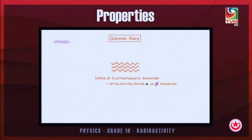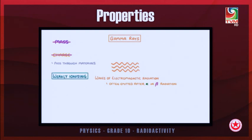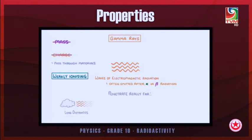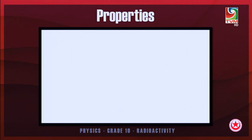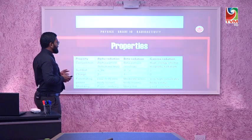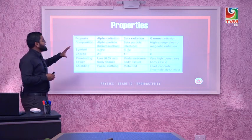Gamma rays are emitted after alpha or beta radiation in order to release excess energy inside an atom. They do not have mass or charge and pass through materials, which means they are very weak in ionizing power. They can travel very long distances and can be stopped by thick sheets of lead or concrete.